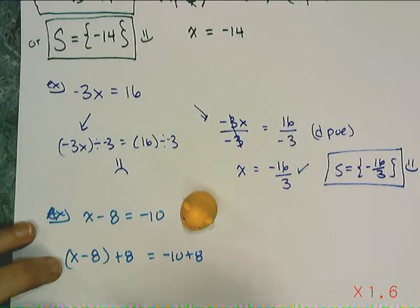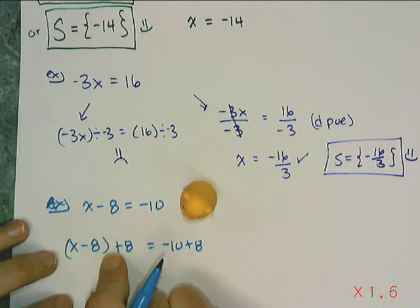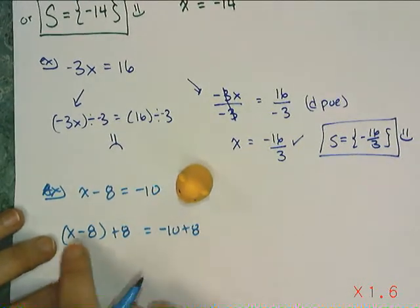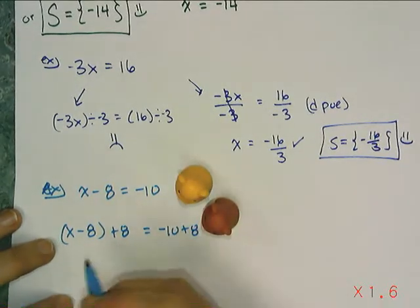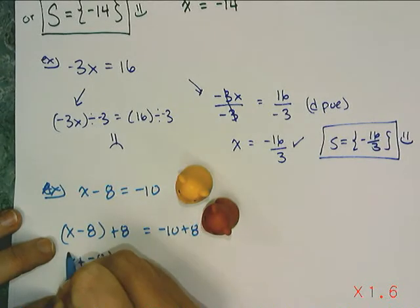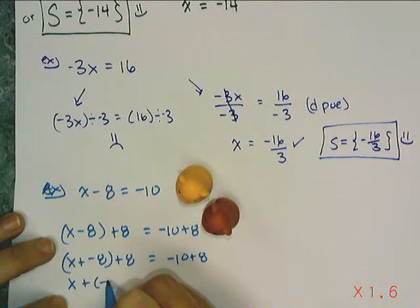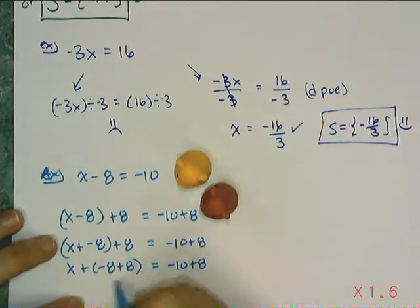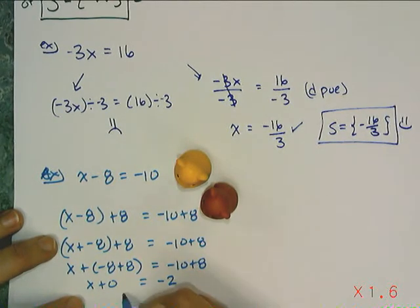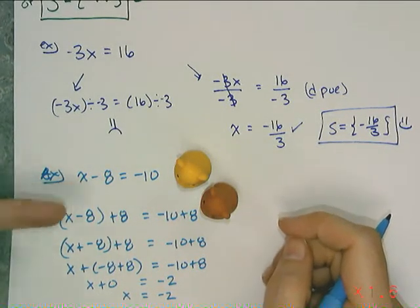Those parentheses mean you need to use the associative property — but you can't associate with subtraction. This becomes a two-hamster problem because you have to use the definition of subtraction to transform that side. Then you can associate and put the negative eight plus the eight together, getting negative ten plus eight. Adding negative eight plus eight gives x plus zero equals negative two, and then x equals negative two. That's five steps to do something that's really a one-step problem.